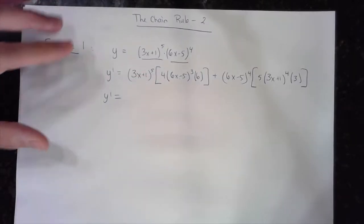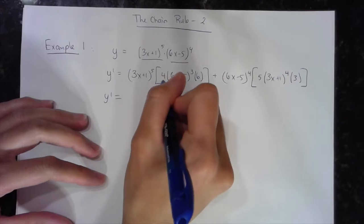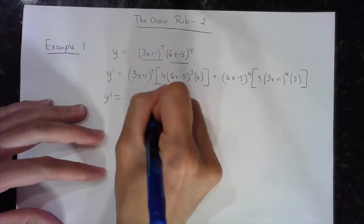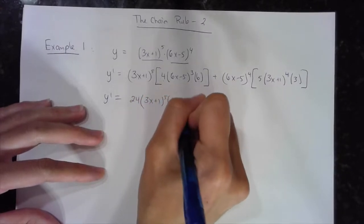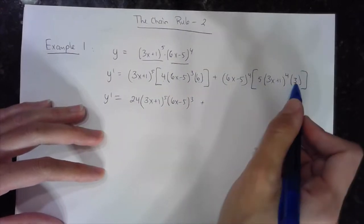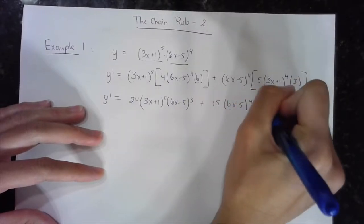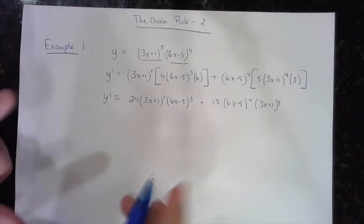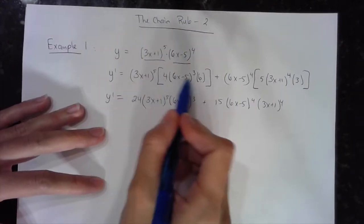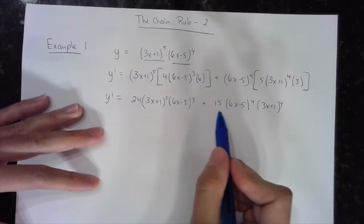Our cleanup is basically finding a GCF. Starting with what we can do with each term: I can multiply this 4 and this 6 to get 24, and I still have (3x + 1)^5 and (6x - 5)^3. Over here, I can multiply this 5 and this 3 to get 15, times (6x - 5)^4 times (3x + 1)^4. So I multiplied the numbers outside the parentheses and brought them to the front.